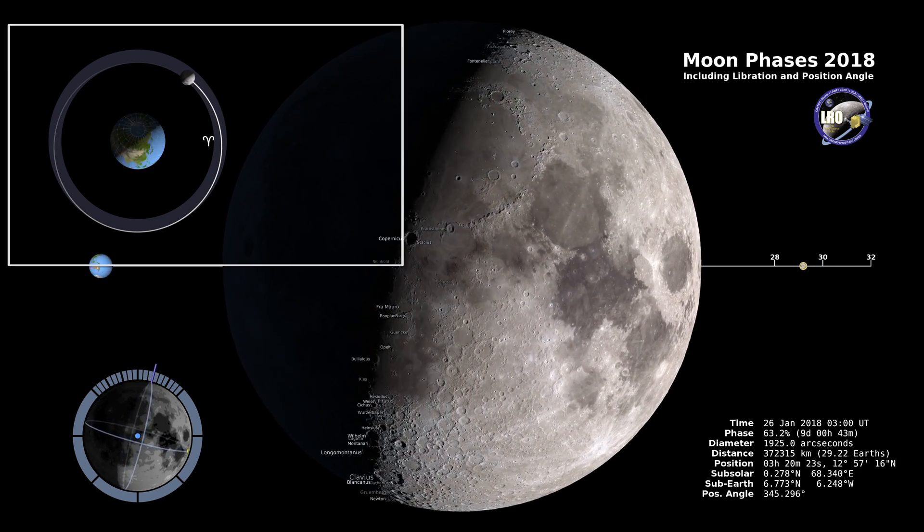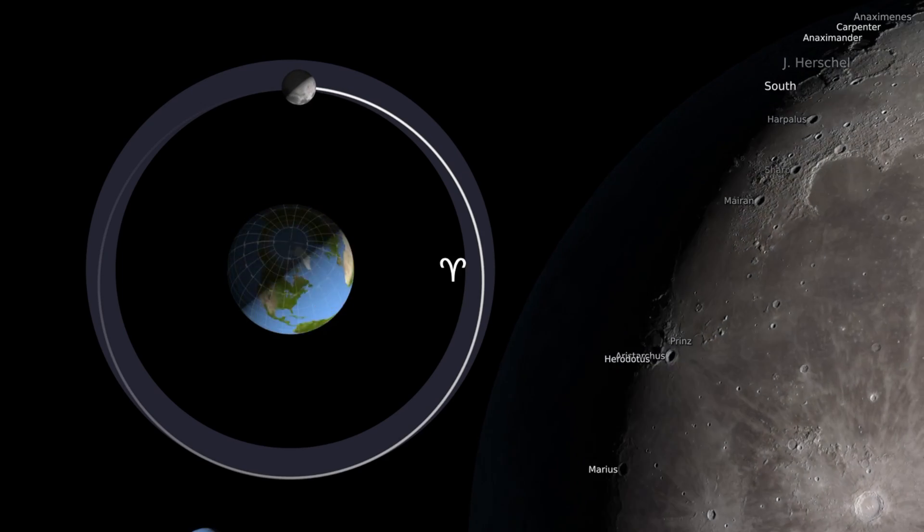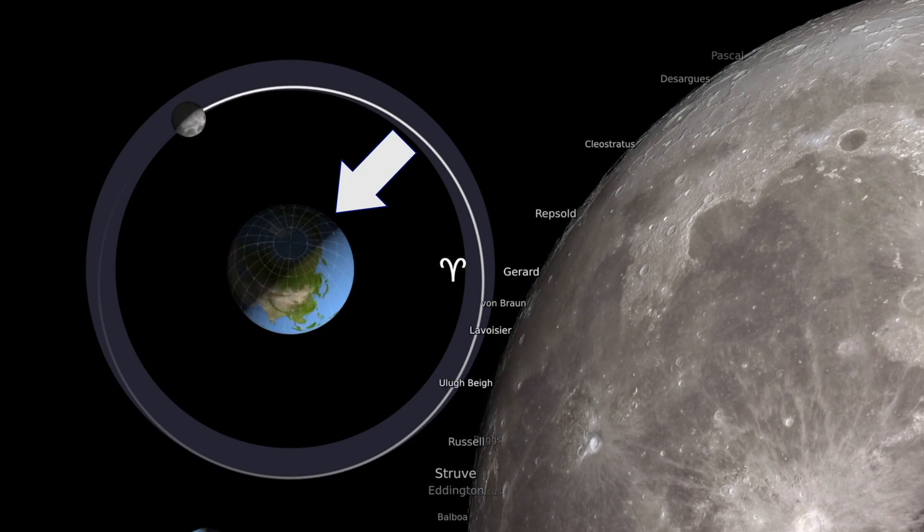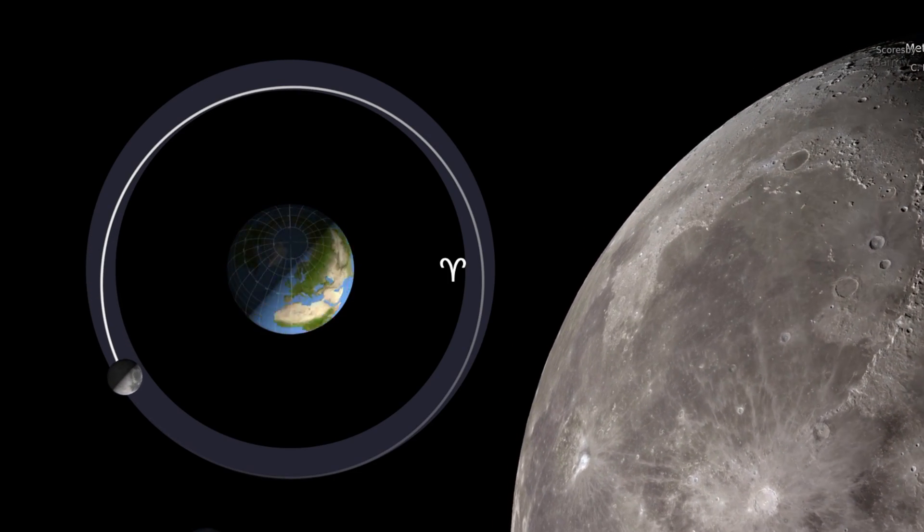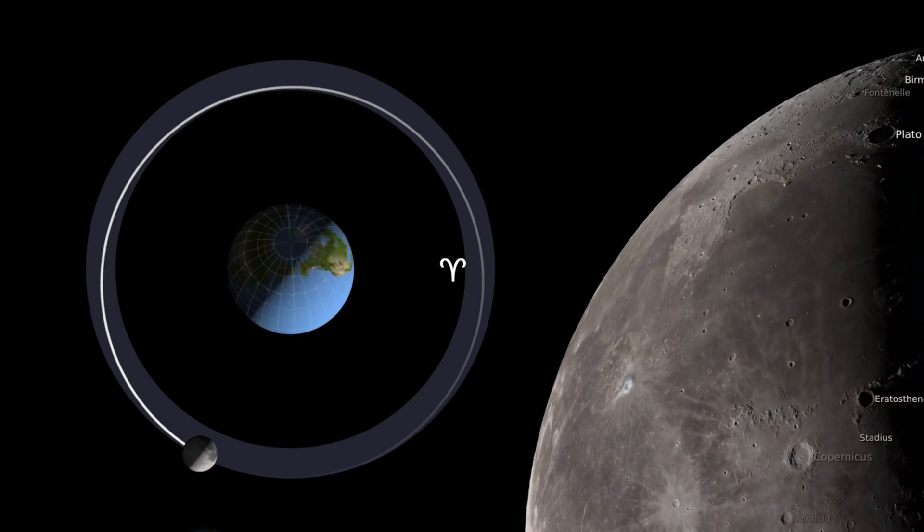So the first thing I want to look at is the upper left-hand corner. You see the earth as it's animated. You can see it's rotating on its axis and you see there the day and night side. You can also see the gray circle around the earth is the moon's orbit.